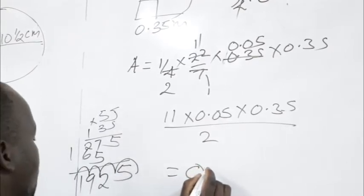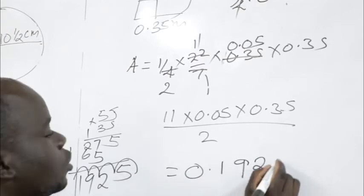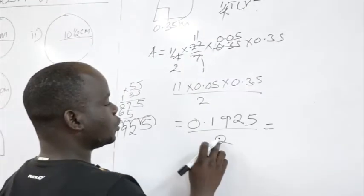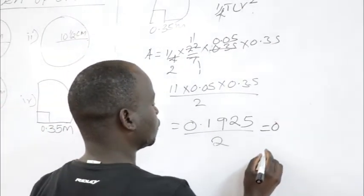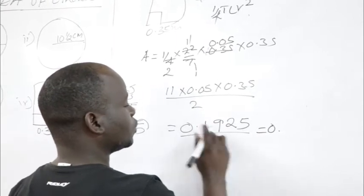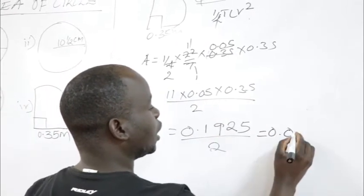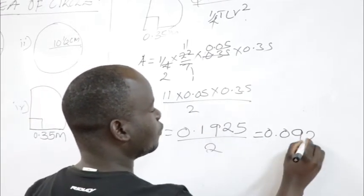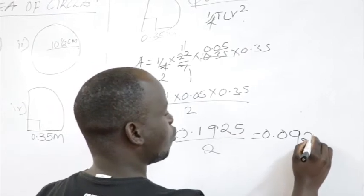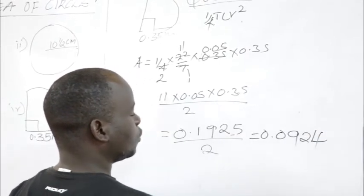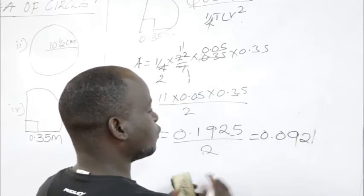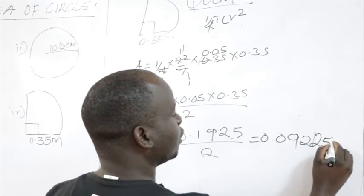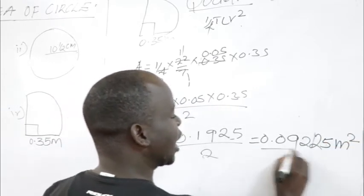Dividing 0.1925 by 2: 2 into 0.1925 gives 0.09625. That is our area for the quarter circle, expressed as a decimal.